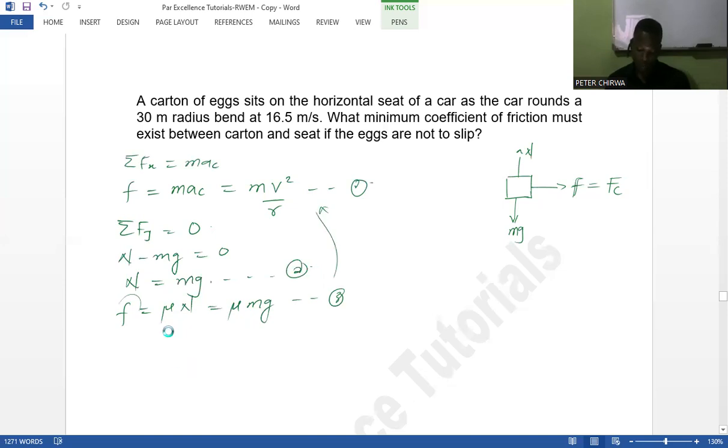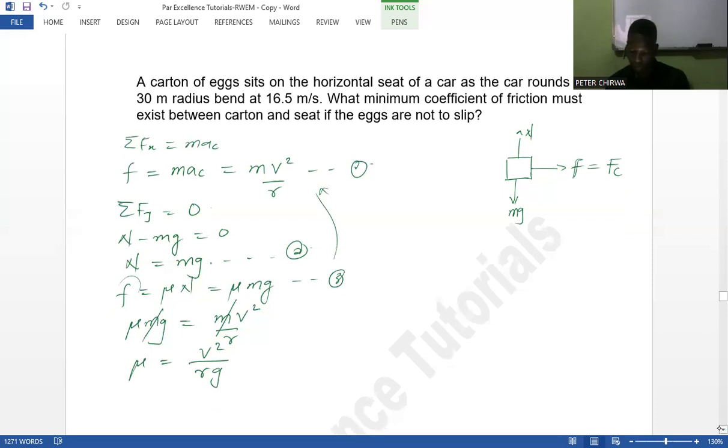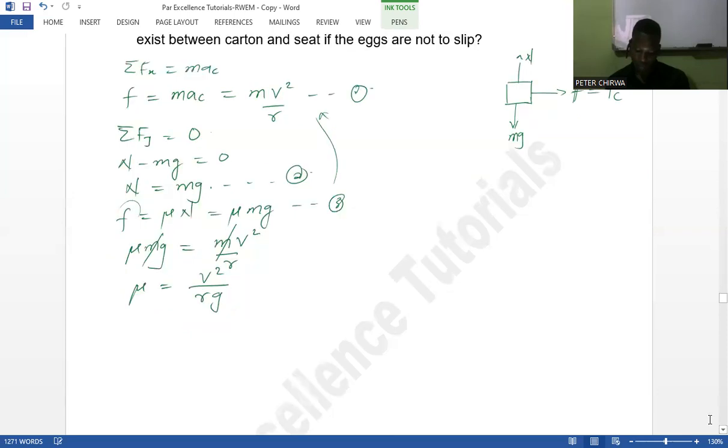...what we're going to have is μmg equals mv squared over r. So we have m and m can cancel, and then we can rearrange this as μ equals v squared over rg like that. So from there now we can see that we have all the values of variables that we can put in.